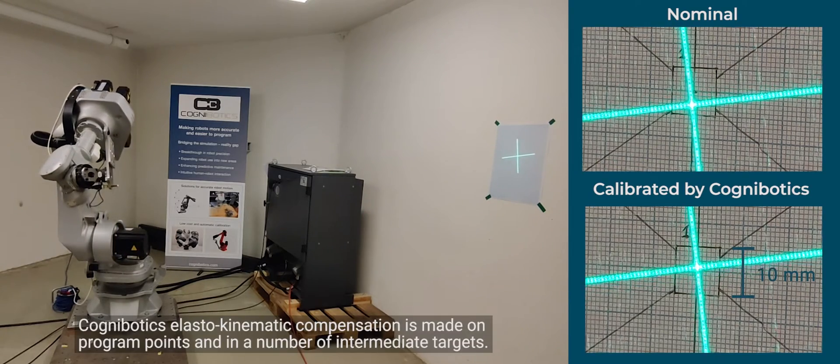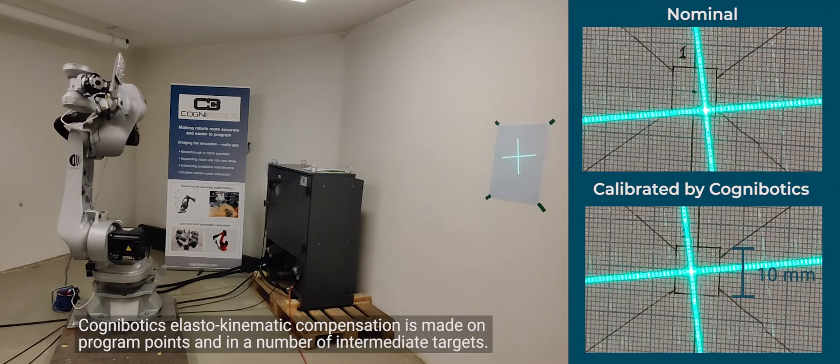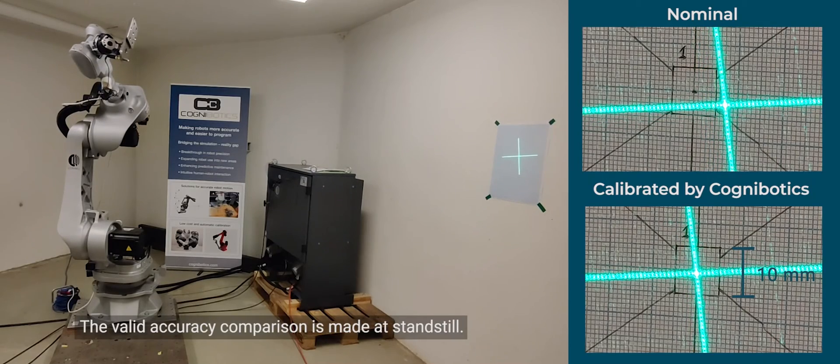Cognobotics elasto-kinematic compensation is made on program points and in a number of intermediate targets. The valid accuracy comparison is made at standstill.